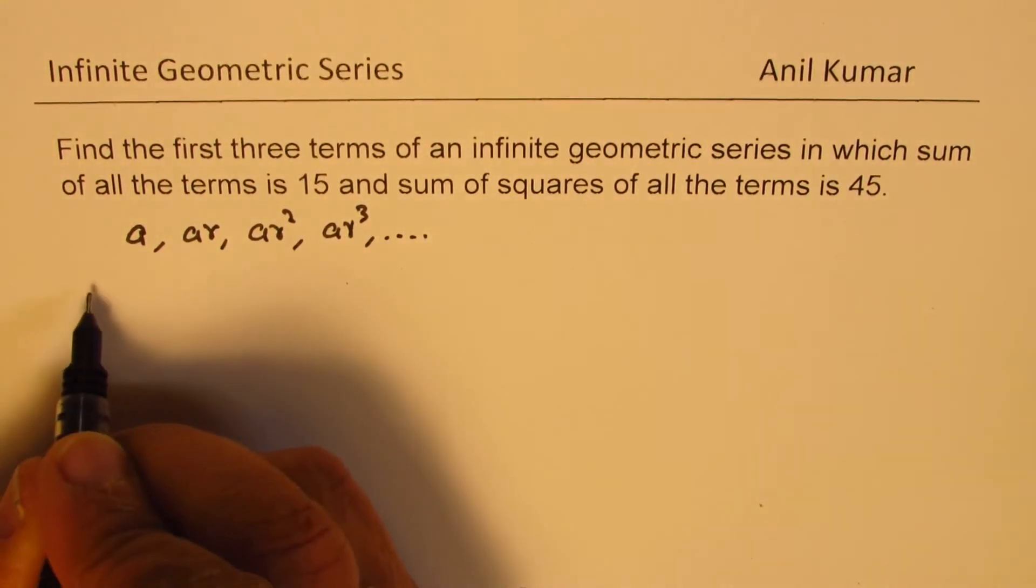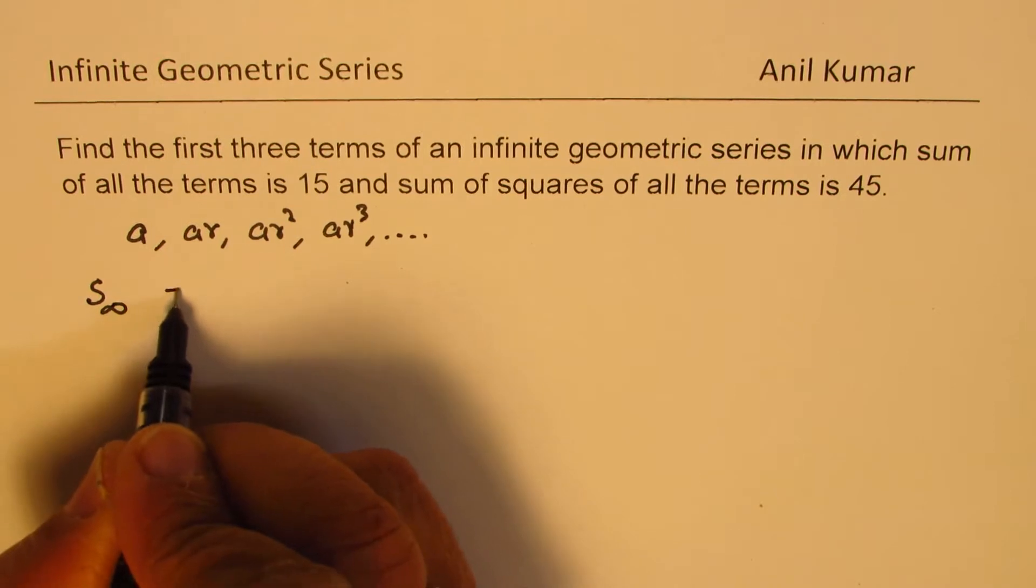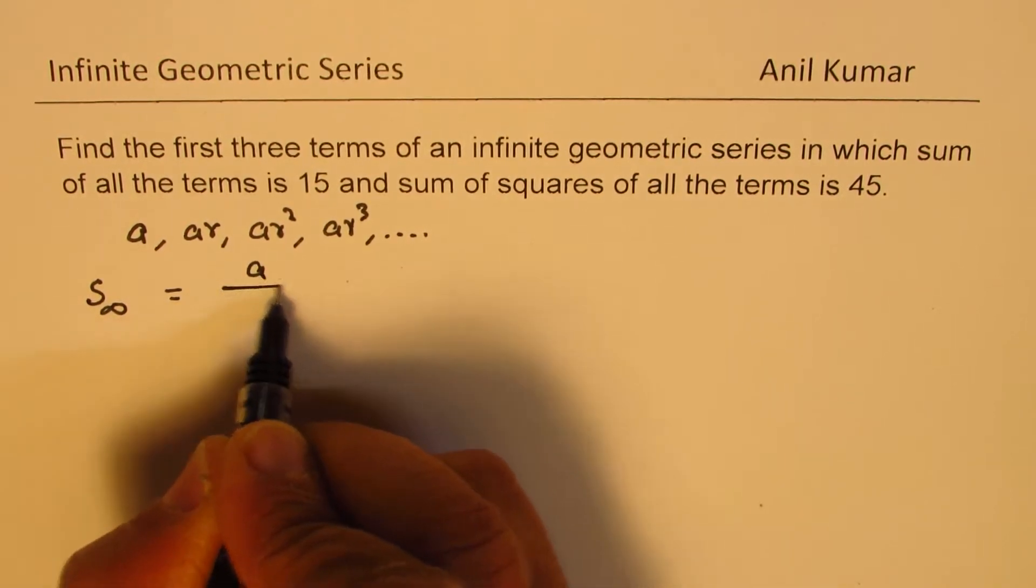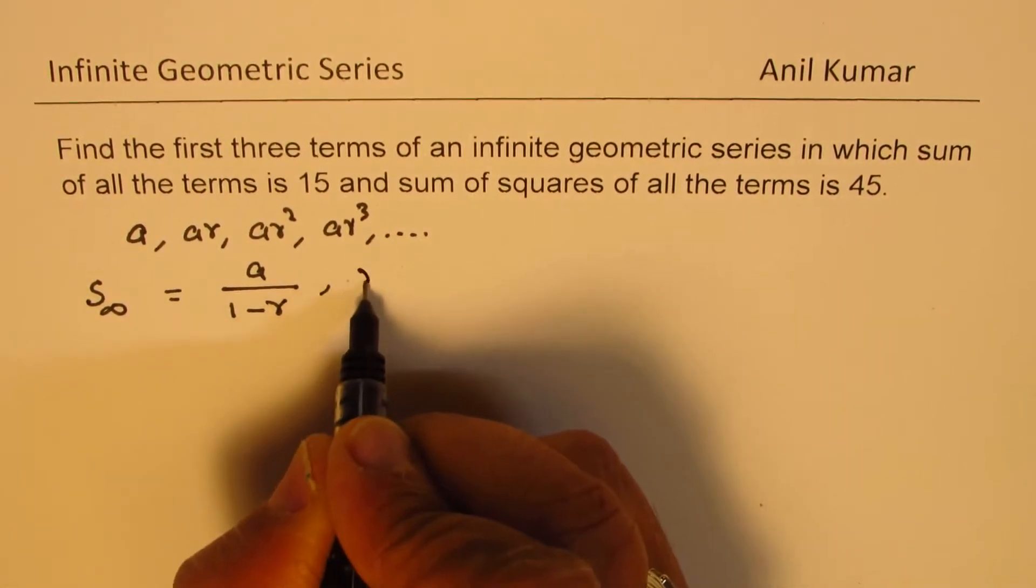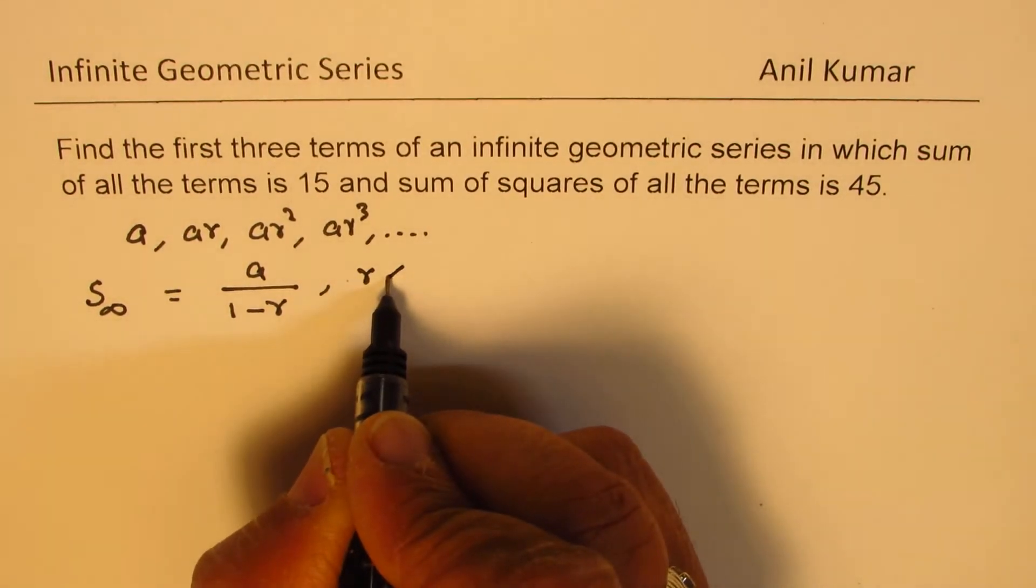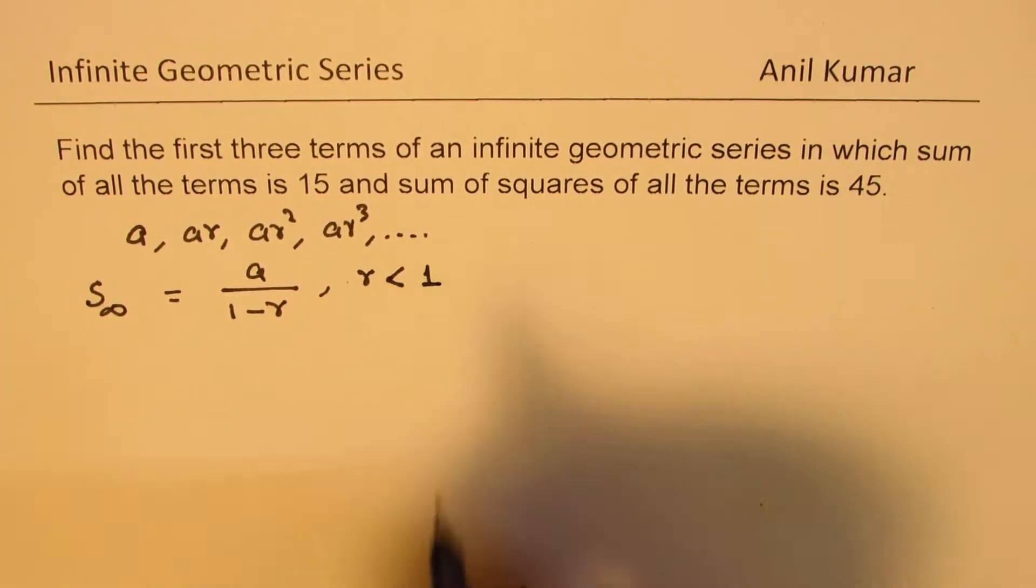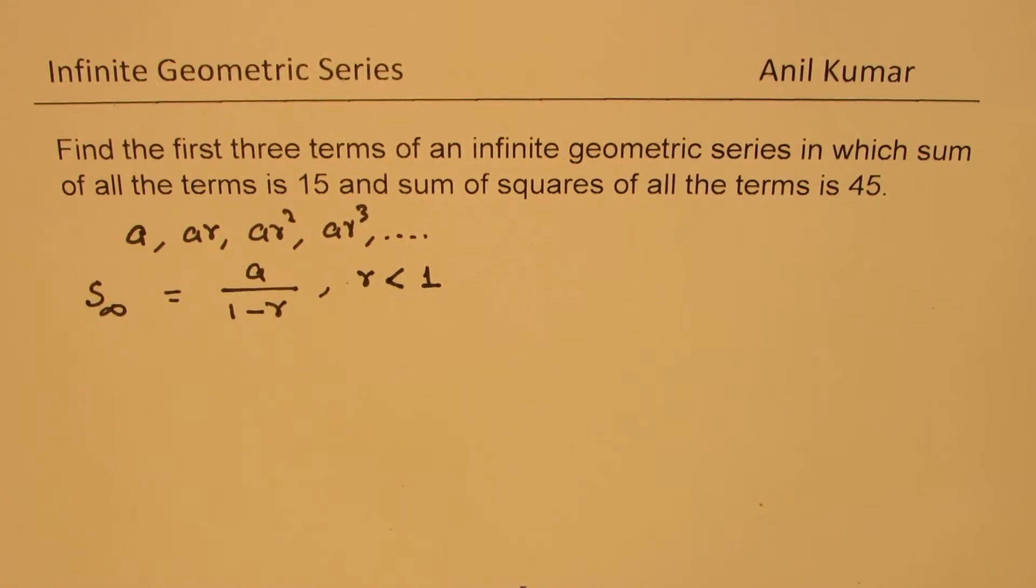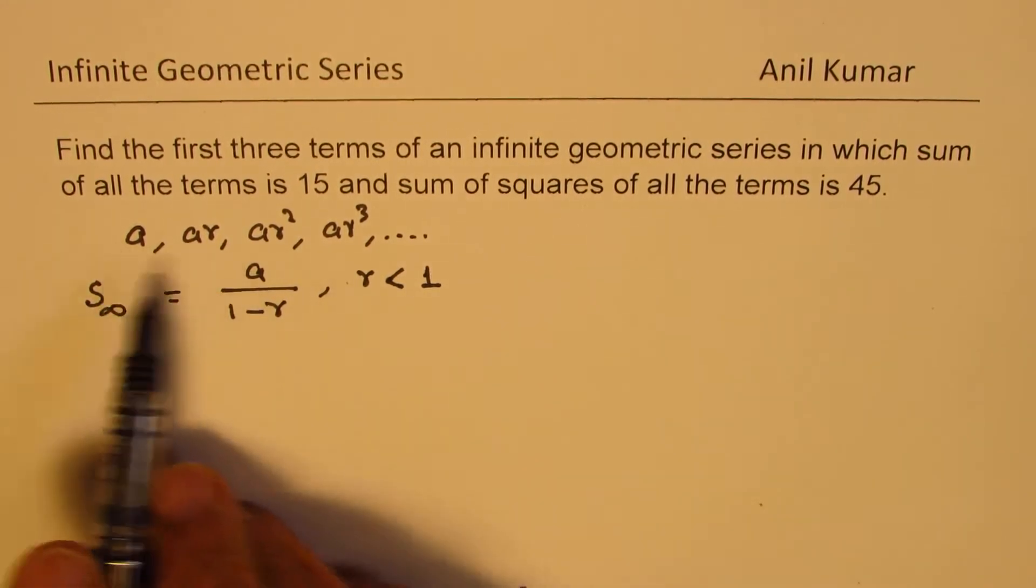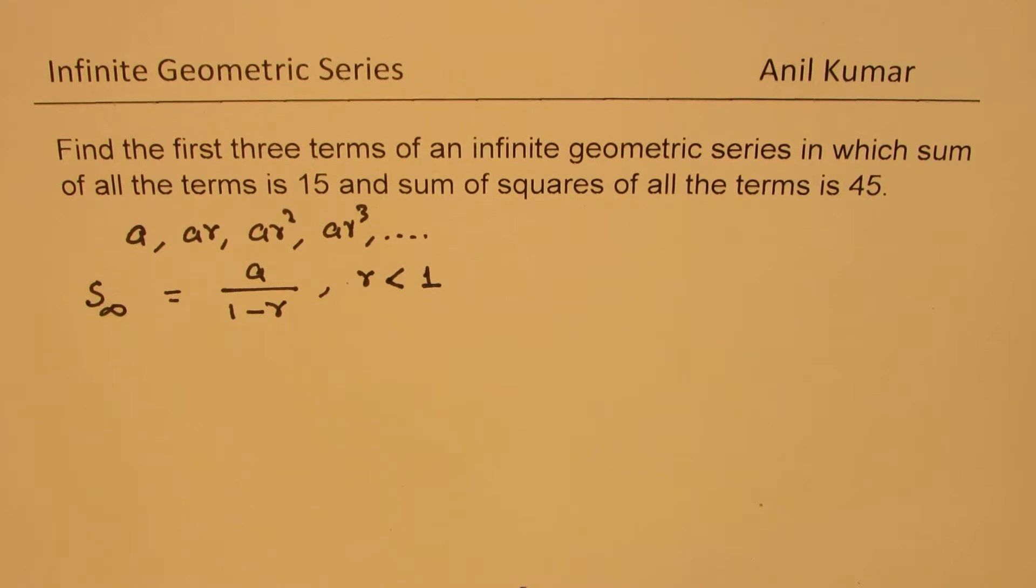That infinite series sum is basically equal to A over 1 minus R, if R is very less or it's less than 1. Small quantity, less than 1. So that is what an infinite series is.